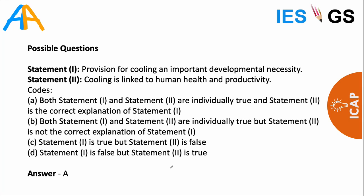There can be different types of questions from this topic. One possible question: 'Provision of cooling is an important developmental necessity' — Statement 2: 'Cooling is linked to human health and productivity.' Through this cooling action plan, we are trying to achieve cooling comfort for all sections of the population because cooling is linked to human health and productivity. When temperature is at an optimum level, humans are more productive.